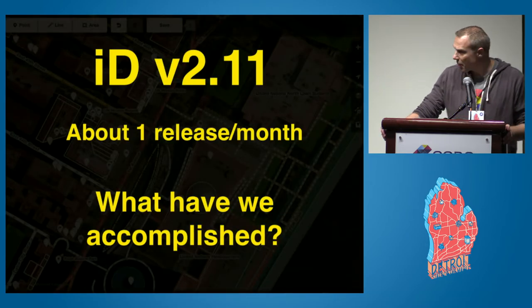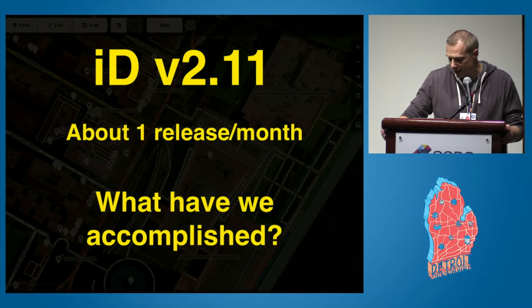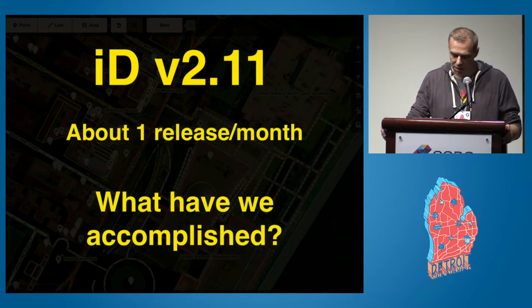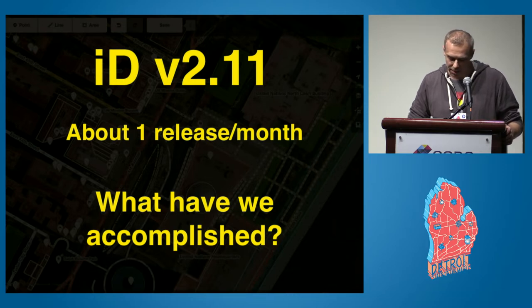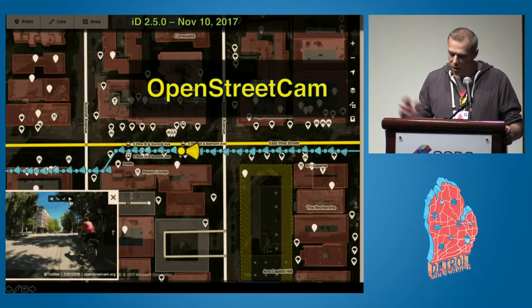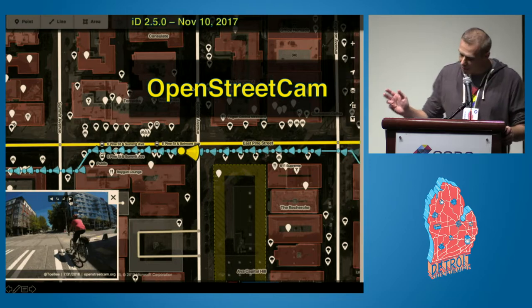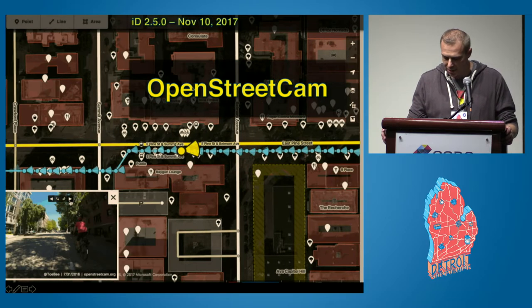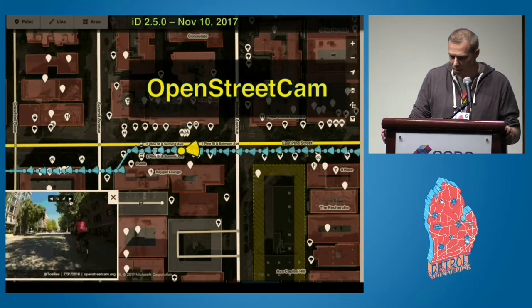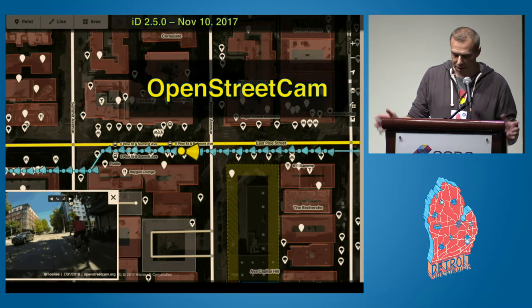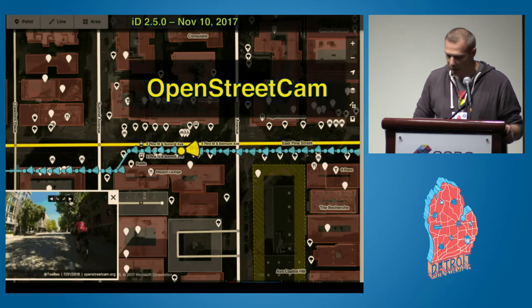Where are we today? iD is currently at version 2.11 — we just released a new version in August. I try to release a new minor version about once a month, though sometimes we go a few months without a release if we're working on something bigger. In this talk I'll highlight some accomplishments from the past year, going all the way back to November of last year — shortly after State of the Map US in Boulder — when we released version 2.5, which added support for OpenStreetCam. Thank you to Martijn and his team from TeleNav for helping land this.